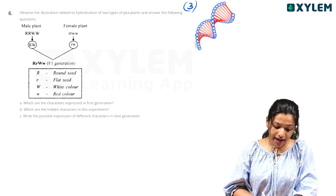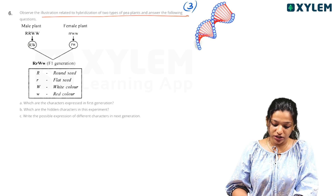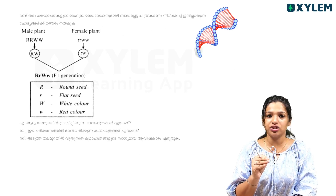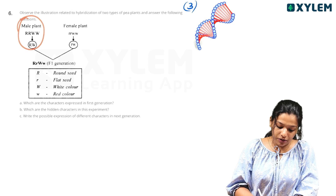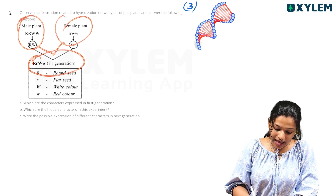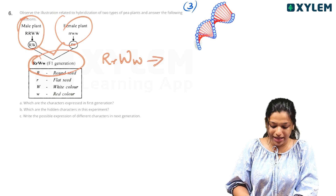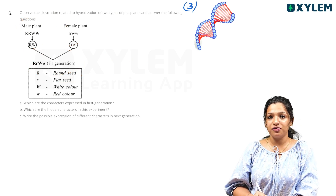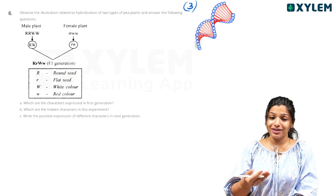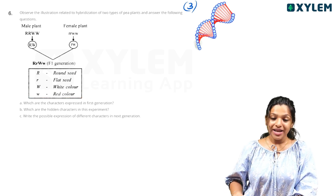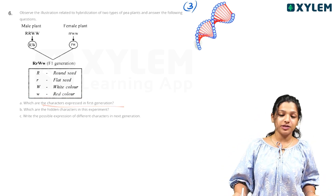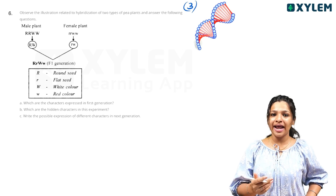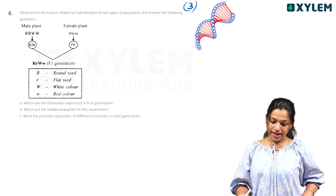The third question asks us to observe the illustration related to hybridization of two types of pea plants and answer the following. We are looking at a male plant or female plant. Capital R is round seed, small r is flat seed, capital W is white color, small w is red color. In the first generation, they expressed certain genes or characters, and hidden characters appeared in the second generation.